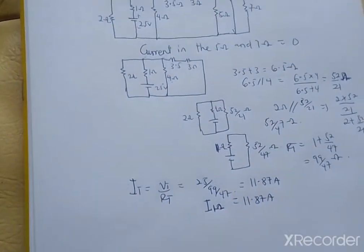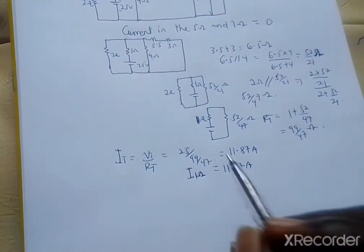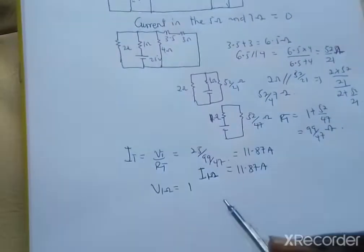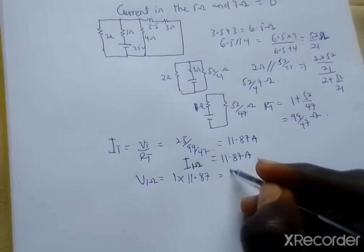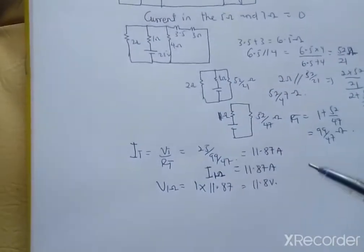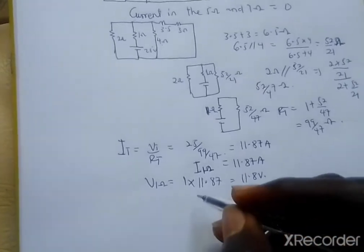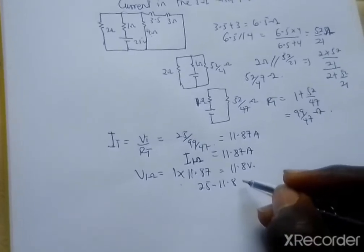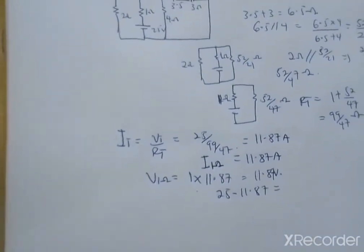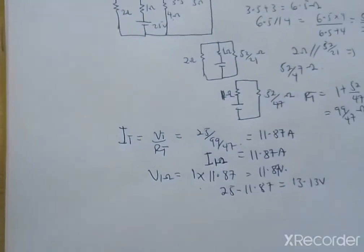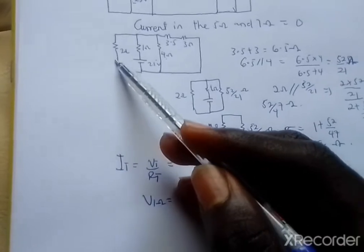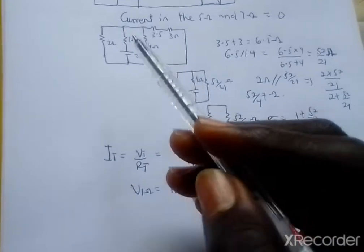Using the voltage drop approach, the voltage across the 1 ohm resistor is V₁Ω = 1 × 11.87 = 11.87 volts. The remaining voltage after this drop is 25 minus 11.87, which equals 13.13 volts. This 13.13 volts is the voltage remaining in the branch and will appear across both the 2 ohm and the 4 ohm resistors, since they are in parallel.